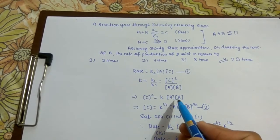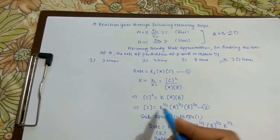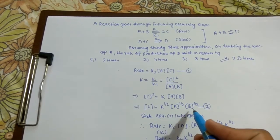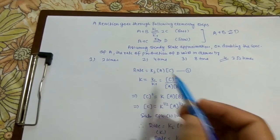Here [C]² equals K into [A] into [B], so [C] equals K^(1/2) [A]^(1/2) [B]^(1/2). This is equation 2 because we have to write overall rate of reaction in terms of A and B.